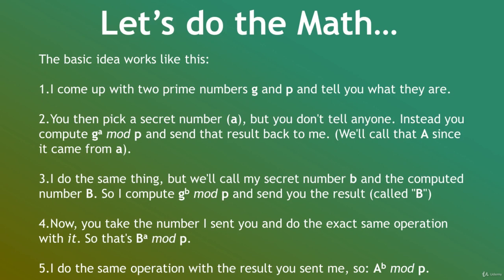Now, you take the number I sent you and do the exact same operation with it. So that's B to the a, modulo p. Finally, I do the same operation with the result you sent me. So that's A to the b, modulo p.